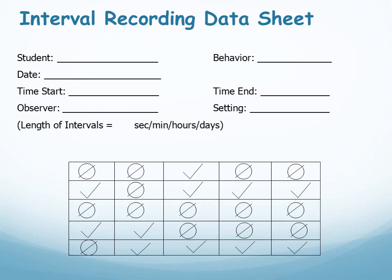Now consider: why would you prefer one type of interval recording over the other? Partial interval is usually used for actions of shorter length — hand raising, curse words, laughing, and so forth. These are behaviors that wouldn't last for the entire interval. Would we want a youngster's hand in the air for 10 minutes? Whole interval recording is for longer-lasting behaviors — being on task, perhaps defined as engaged in the directed action, being asleep, staying in one seat. These are behaviors that could be displayed for the entire interval.